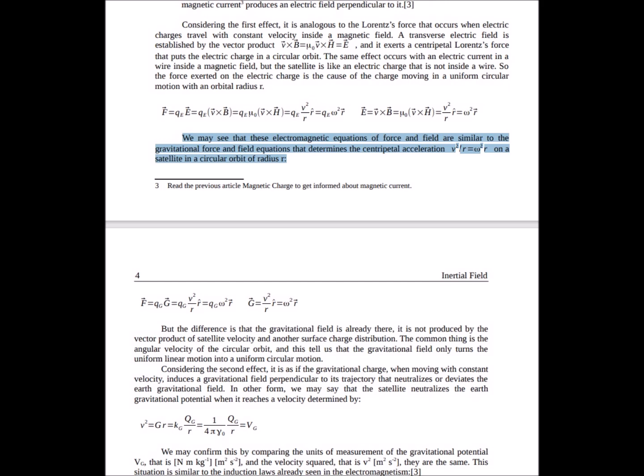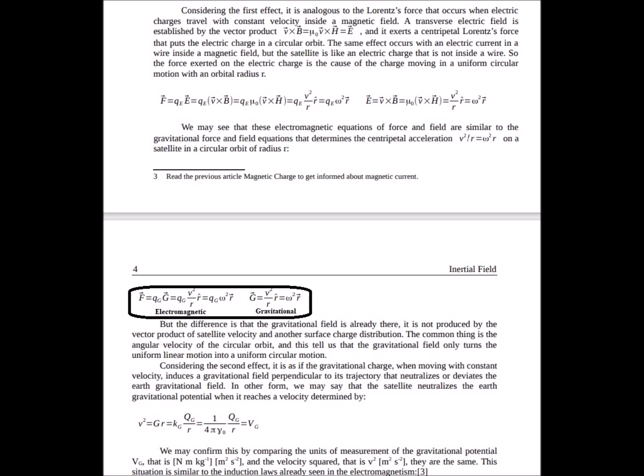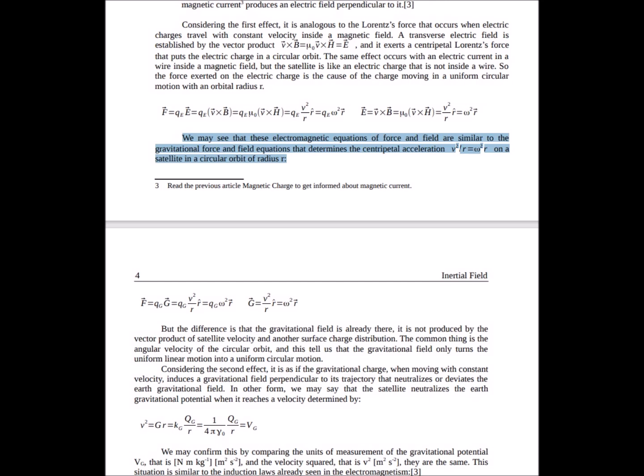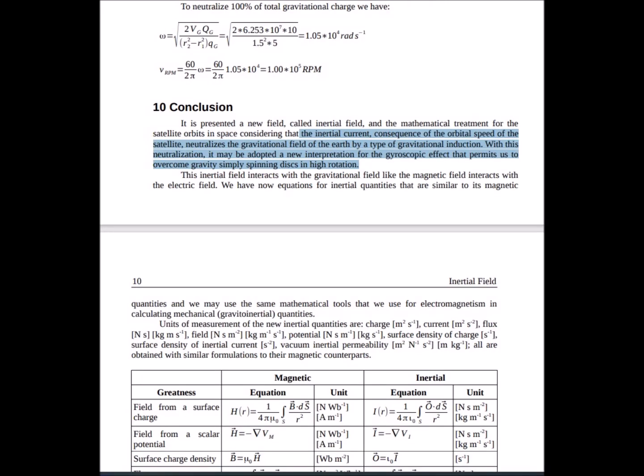He explains further that these electromagnetic force and field equations are very similar to the gravitational force and field equations that determine the centripetal acceleration of a satellite in a circular orbit of radius r. He concludes by saying that here is presented a new field called the inertial field and the mathematical treatment for the satellite's orbit in space considering that the inertial current, which is the consequence of the orbital speed of the satellite, neutralizes the gravitational field of the earth field by a type of gravitational induction. With this neutralization, it may be adopted a new interpretation for the gyroscopic effect that permits us to overcome gravity by spinning disks and rings in high rotation.